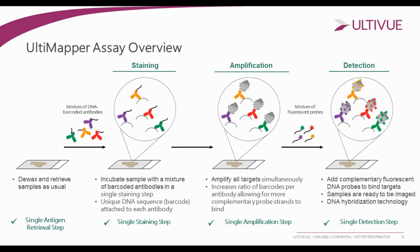The assay utilizes a single cocktail antibody staining step and a single antigen retrieval step — there are no rounds of stripping antibodies off and re-staining. Once primary antibodies have been bound, we go through an amplification step where we amplify the DNA barcodes via tandem repeats. This amplification is linear and occurs at the same rate and at the same time for all targets. This linear amplification allows us to see a wide variety of expression of functional markers such as PD-L1, differentiating low, medium, and high expressors.